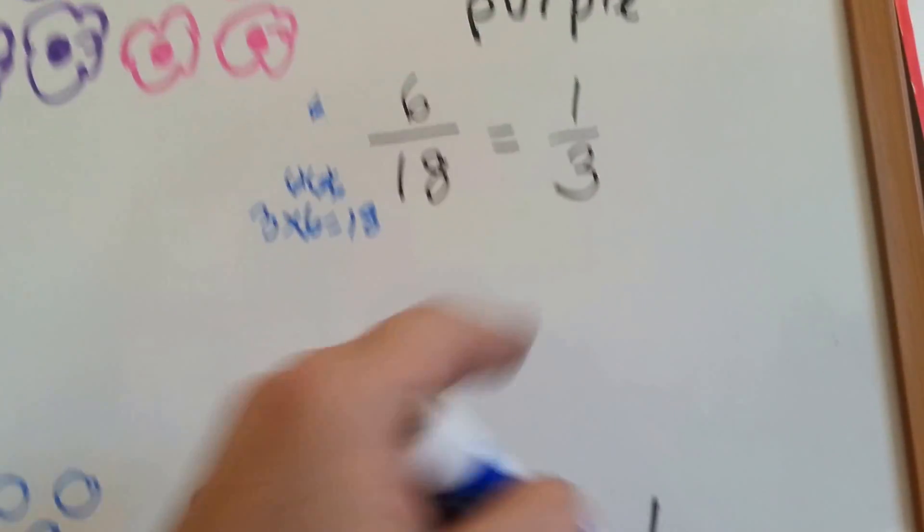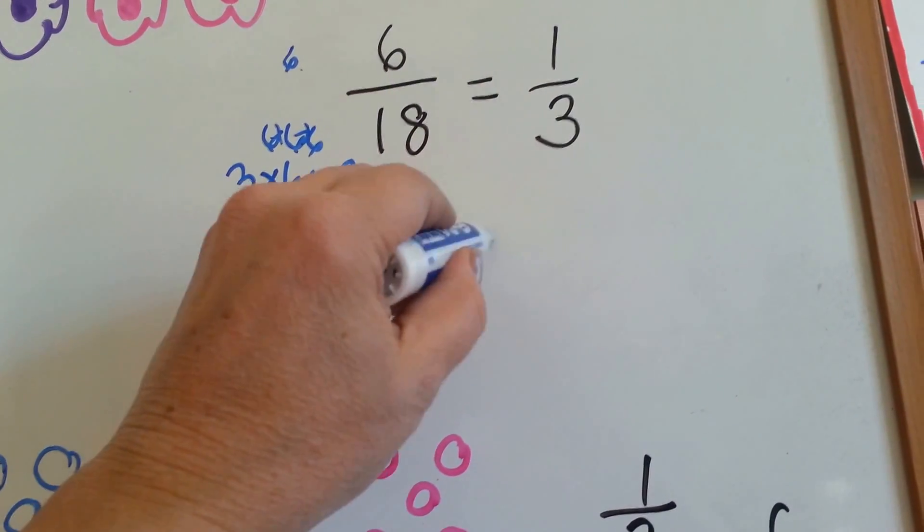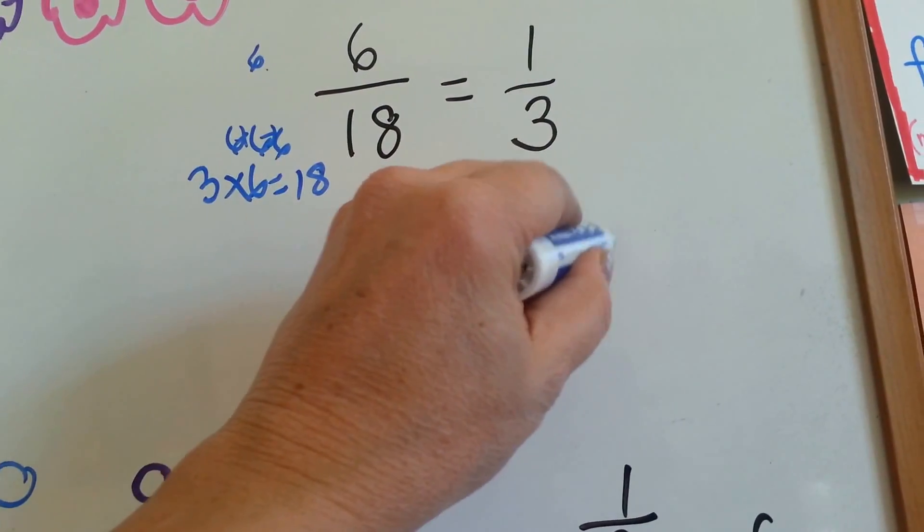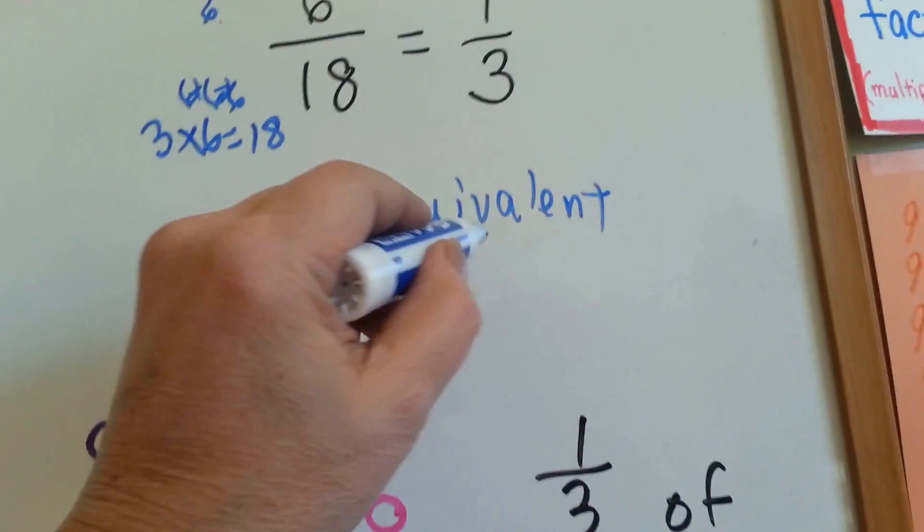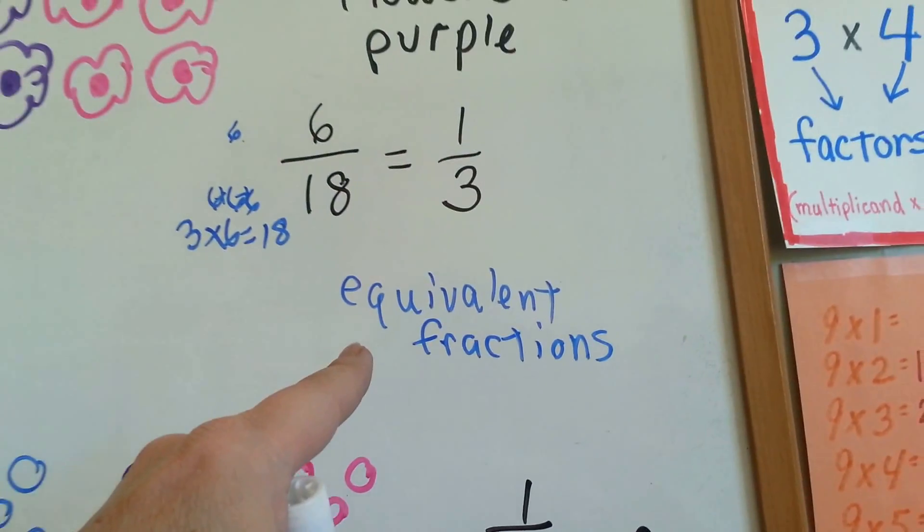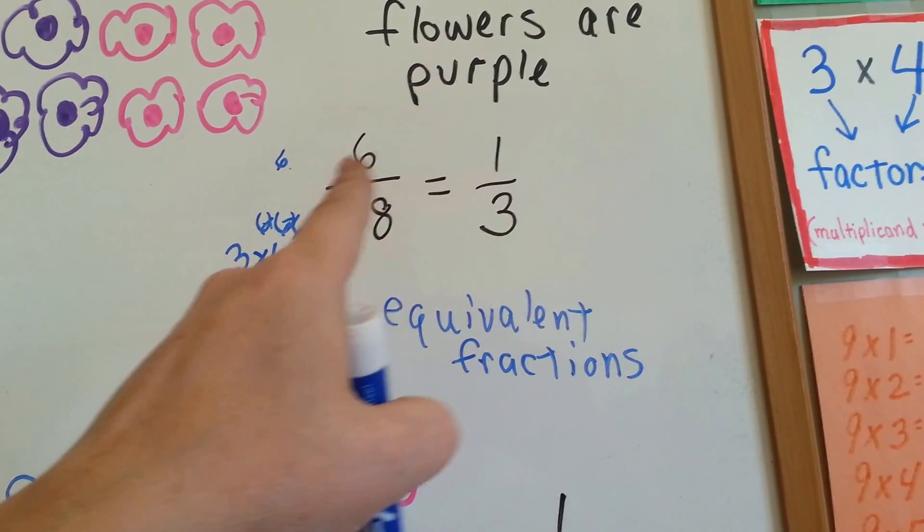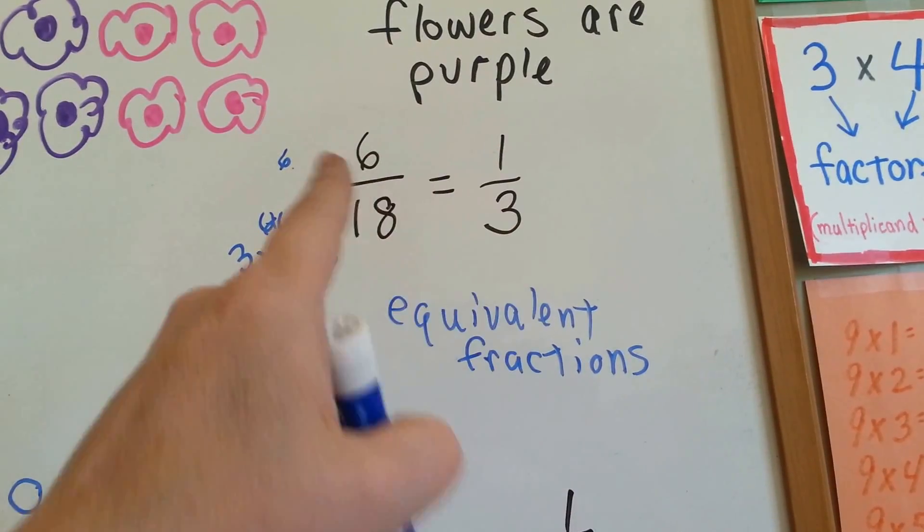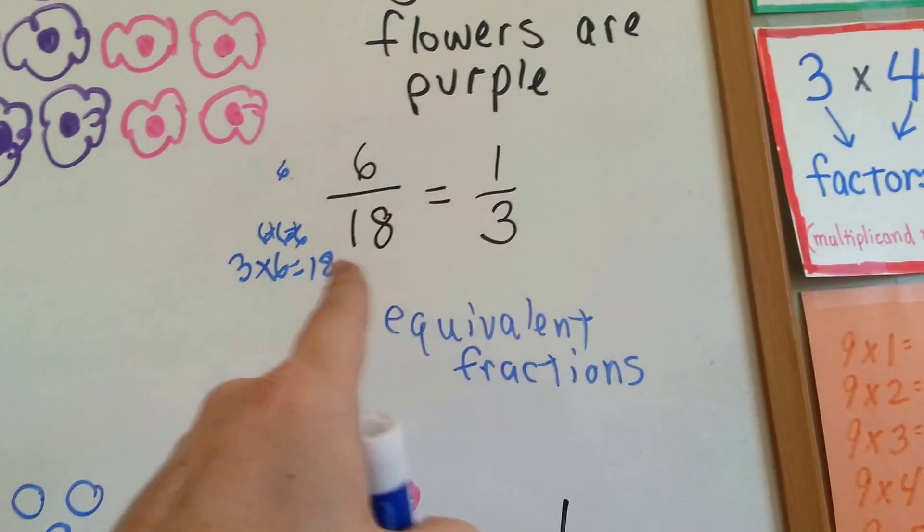These are equivalent fractions. We've been talking about equivalent fractions a lot in the last couple of videos. There's one six, and there's three sixes. See?